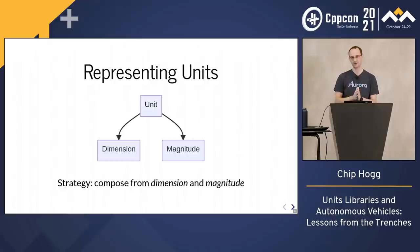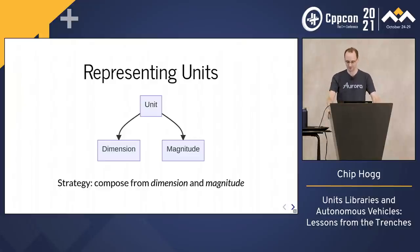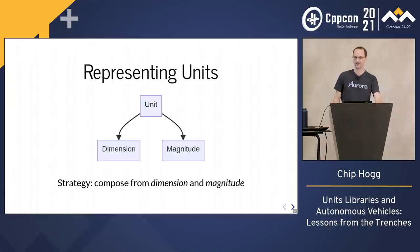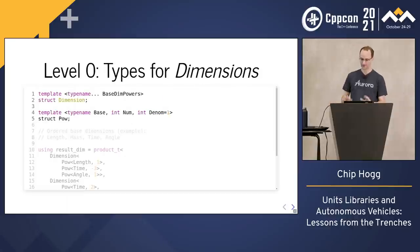If we want computable relationships between units, so that we know that a speed times a time is a length, we're going to need to do some template metaprogramming. But don't fret — we place the utmost importance on the end user experience. If we're doing this right, none of the template metaprogramming leaks out to the end users. They will use templates, but nothing they see will be any scarier than the int in std::vector<int>. Let's see how to make some dimensions.